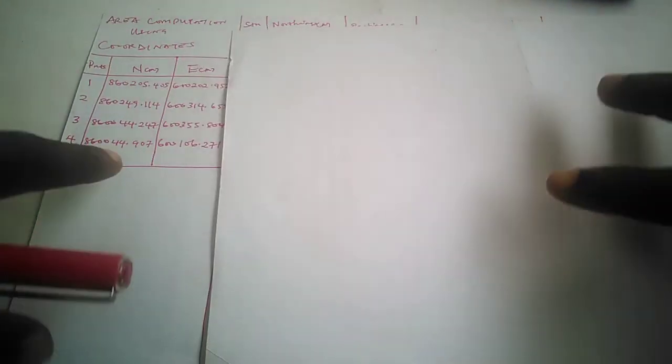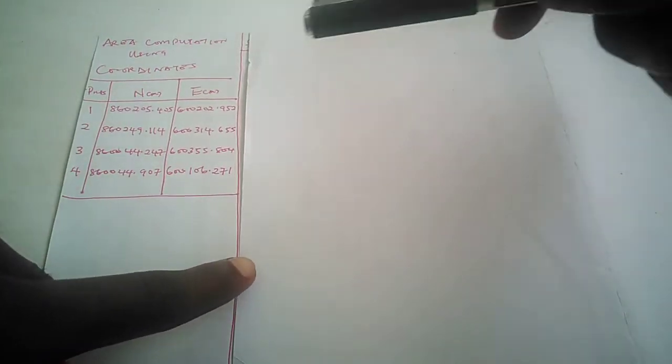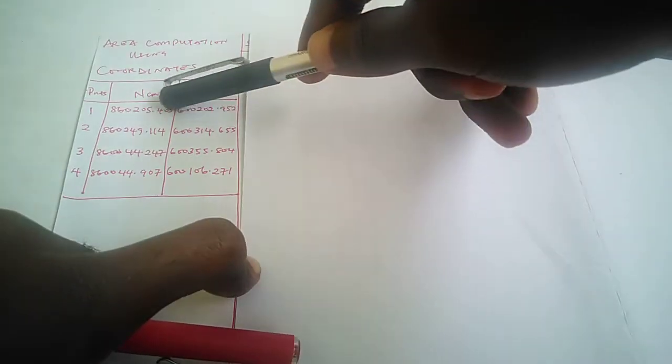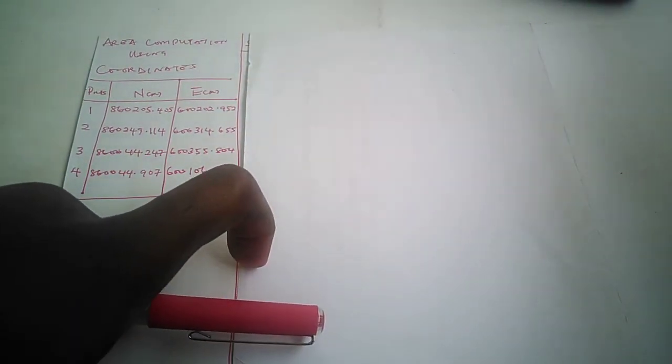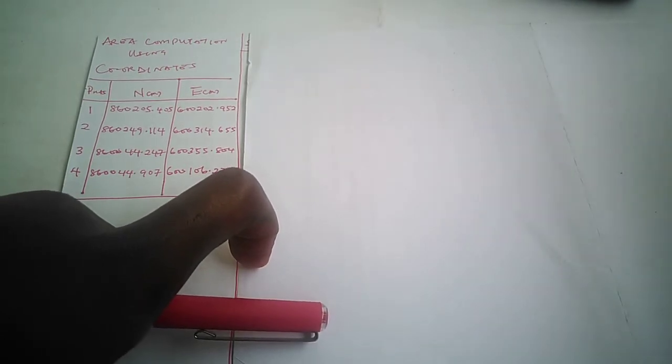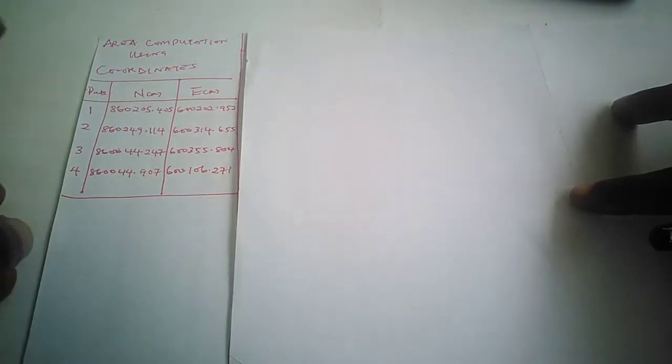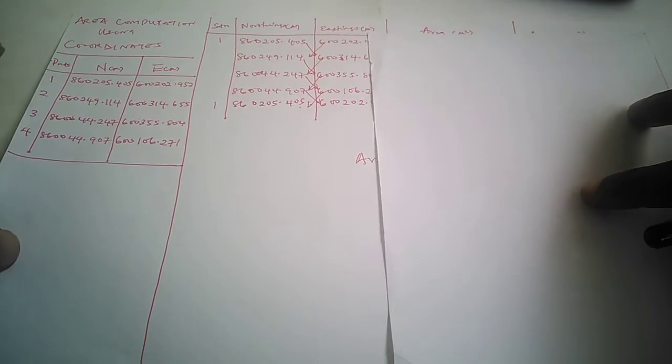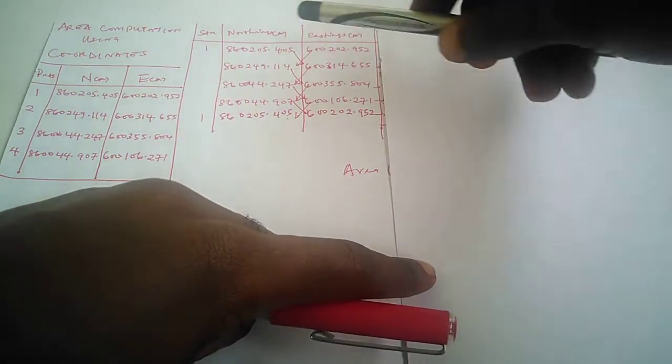We got the corrected coordinates of all the points that were established during the traversing exercise. After we carried out the computation, we got our coordinates here. Now today we want to compute for the area—that means the extent of land covered.